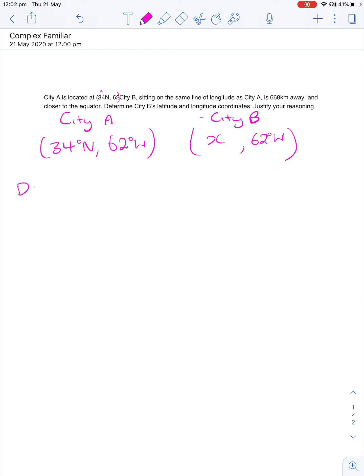They have given us the distance though, which is 668 kilometers. Now we have to sort of backtrack to find the latitude coordinates for City B. So the first thing that I'm going to do is I'm going to use our distance formula. And we're going to backtrack to find our angular distance. Now because they've given us D, I can sub in 668 kilometers for D.